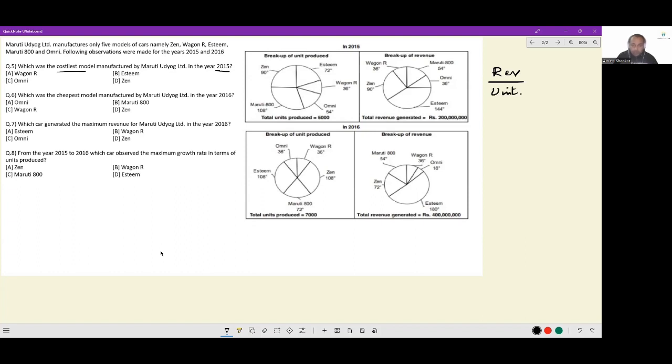Now let us do the work for Maruti. Maruti, I have 54 degrees, which is 54 degrees out of 360 of 200 million by Maruti 800. And on the left hand side, we have 108 degrees by 360 degrees into 5000. This is the figure for Maruti 800. Now remember, question 5 did not ask us to calculate what that cost is. It is simply asking for the costliest model.